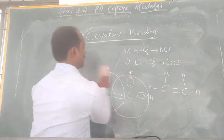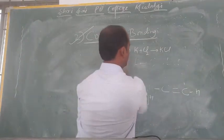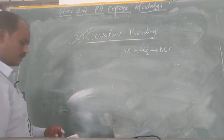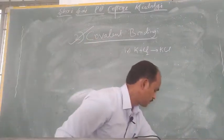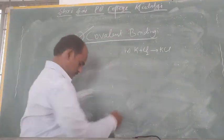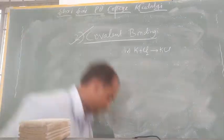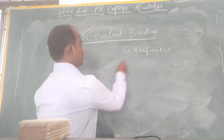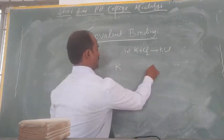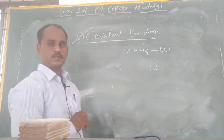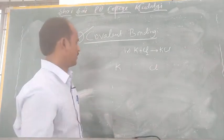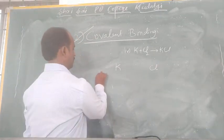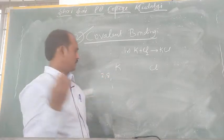Now the example of potassium chloride — this is the ionic bond. You already solved it. This is the ionic bond.